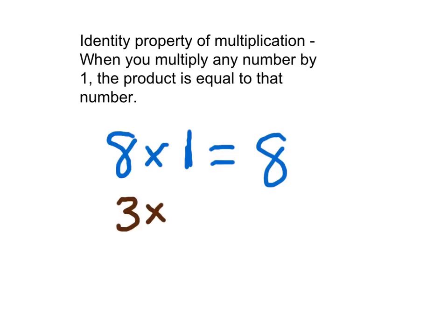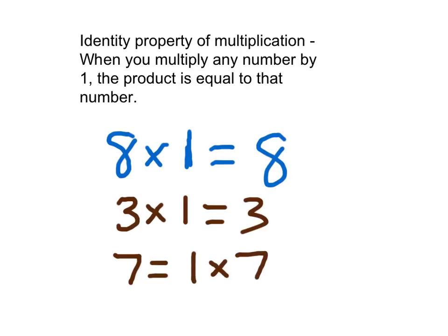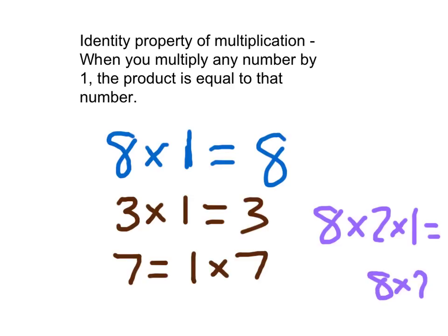Did you write some examples? Hopefully you did. Did you write some that went the other direction, like 1 times 7? Here's another example: 8 times 2 times 1 does equal 8 times 2. This is still the identity property, because 8 times 2 is any number — multiplying by 1 means that product is still equal to 8 times 2.